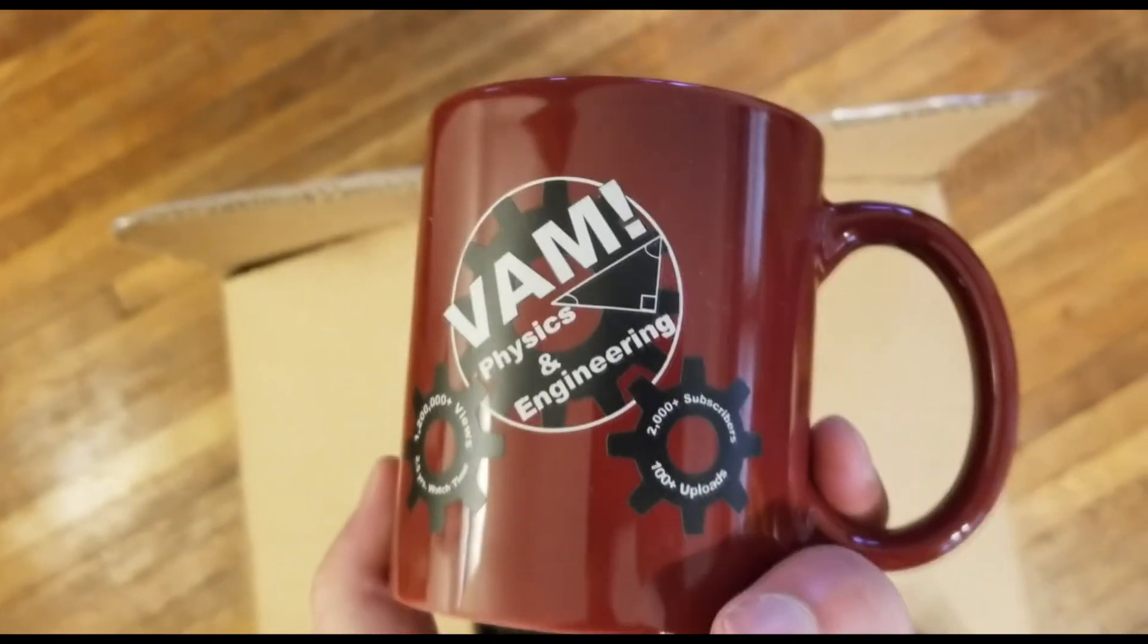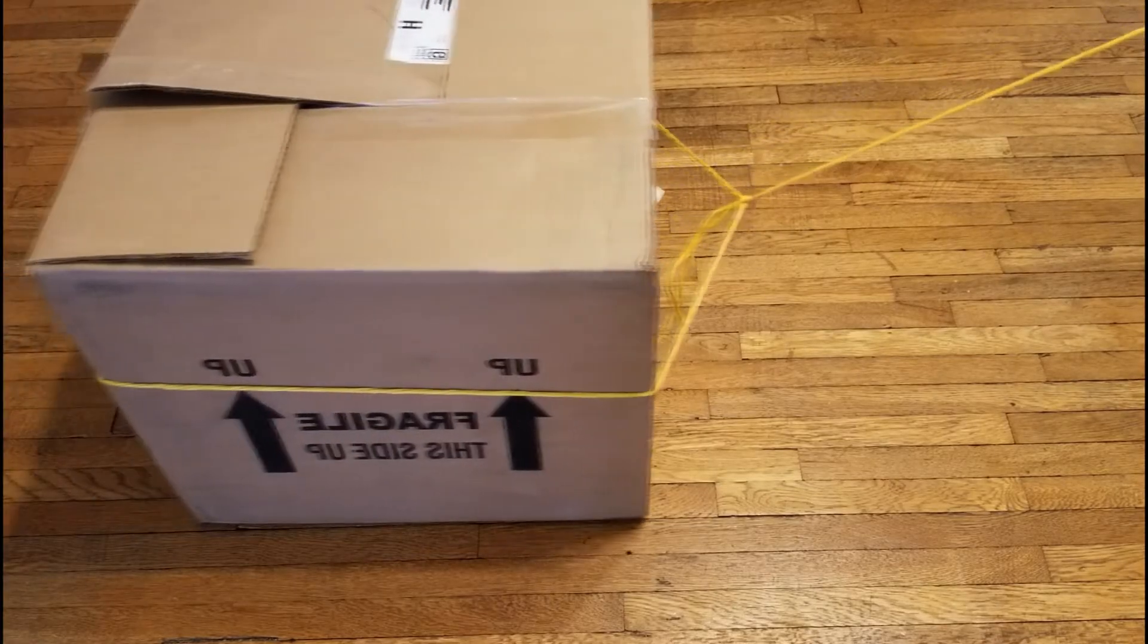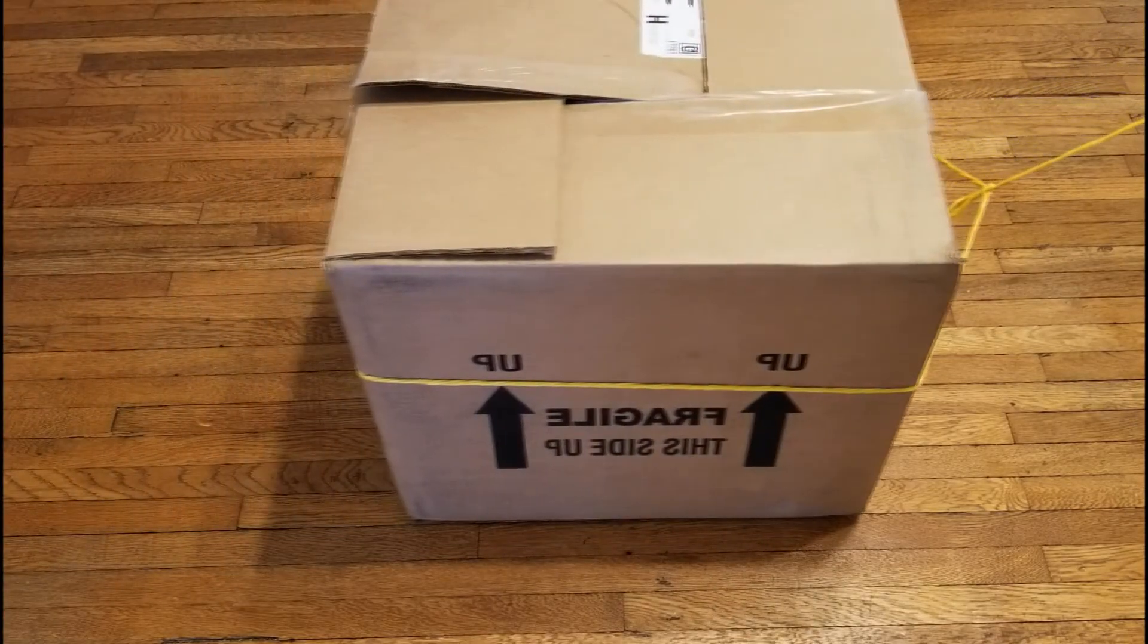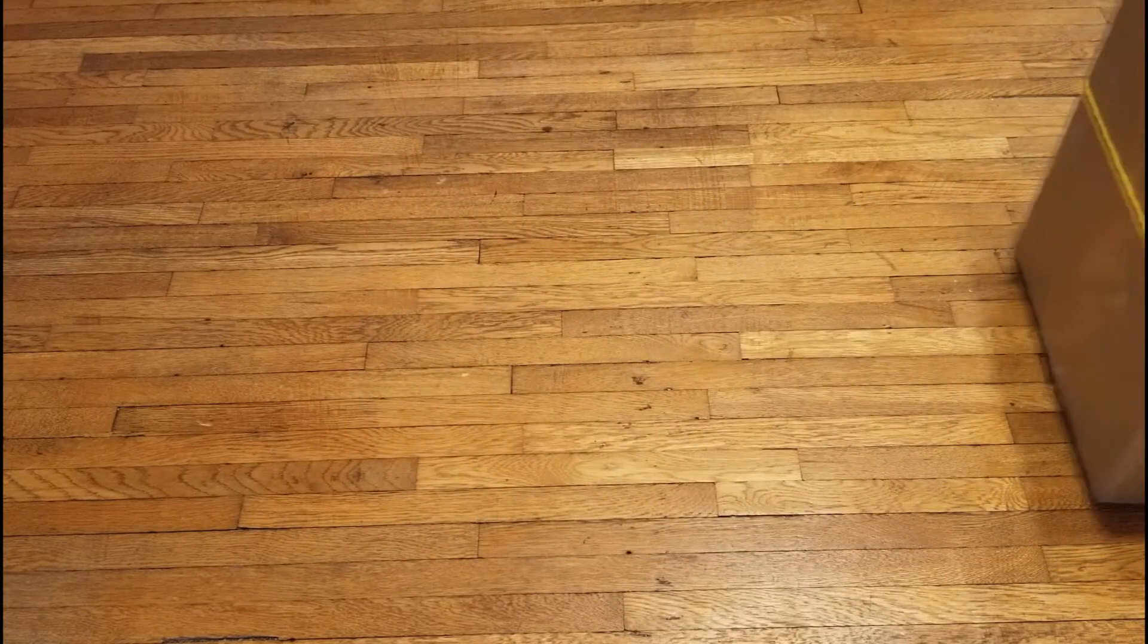So we have a box, full of VAM Physics and Engineering 2000 Plus subscriber mugs. The mass of the box is 15 kilograms and is being pulled at a 20 degree angle with a coefficient of static friction of 0.3. What is the force on the rope needed to get the box to move?